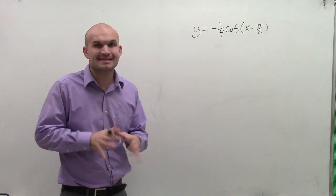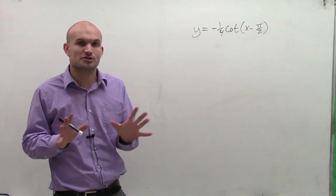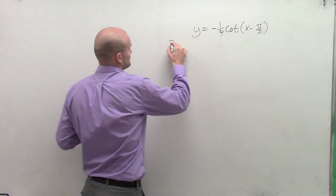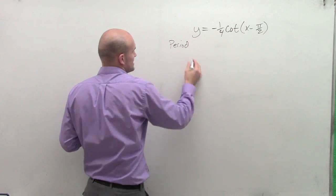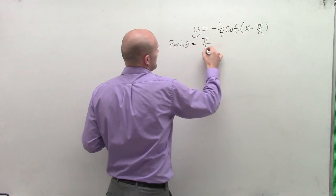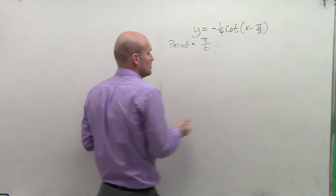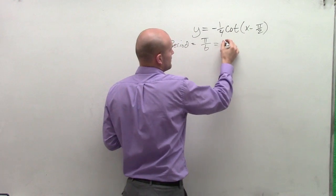So before we get into actually our phase shift and all these other transformations, we always want to determine what the period is of the graph. When dealing with cotangent, the period of the cotangent graph is going to equal pi divided by b, where b is your coefficient of your variable inside your function. In this case, it's 1. So therefore, our period is pi.